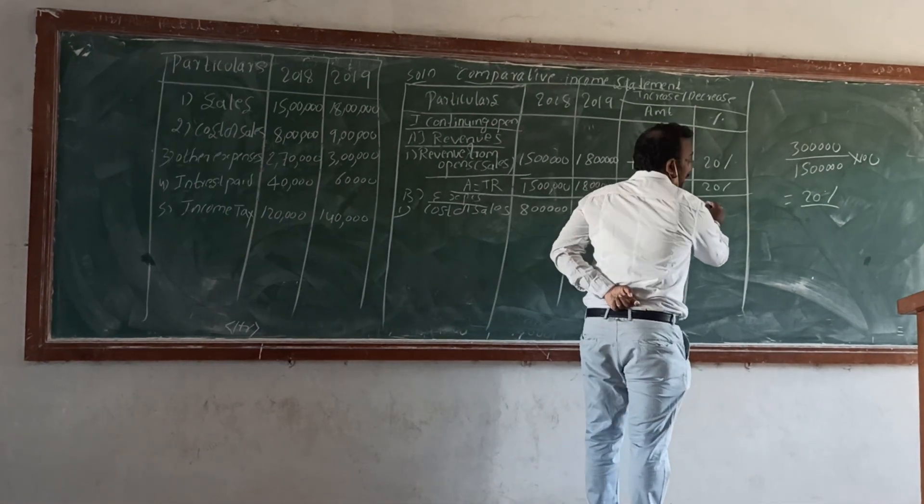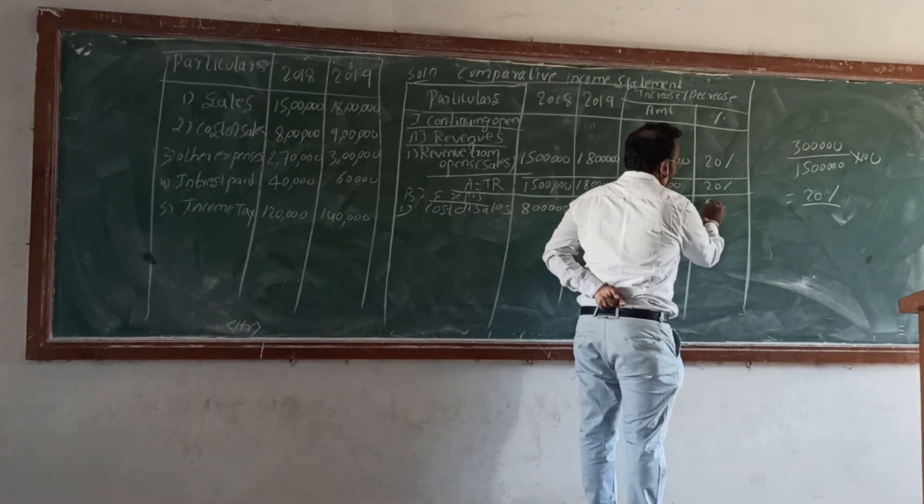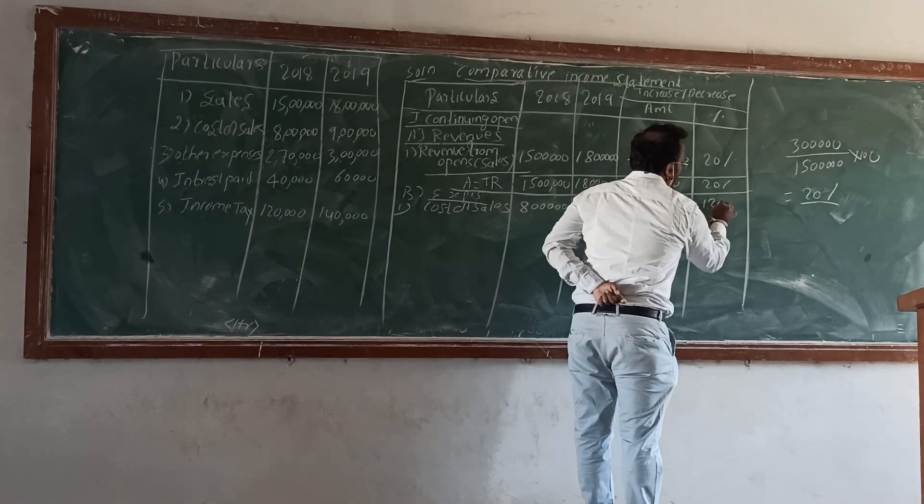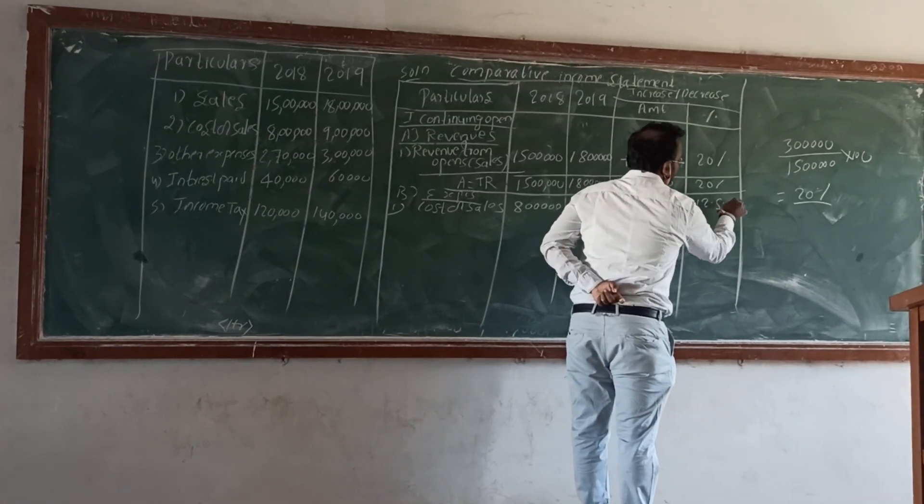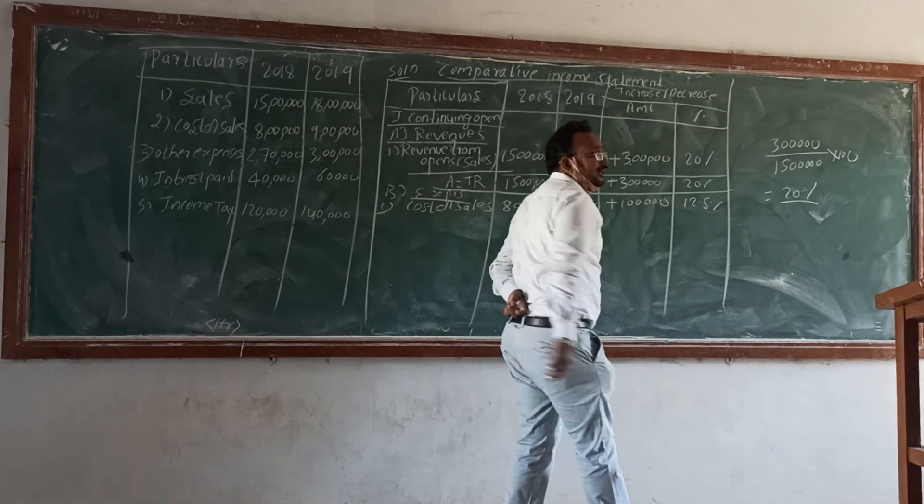The percentage increase in cost of sales is 1 lakh divided by 8 lakh into 100, which equals 12.5%.